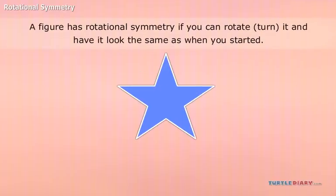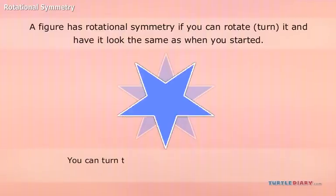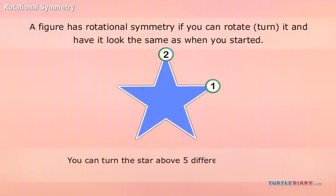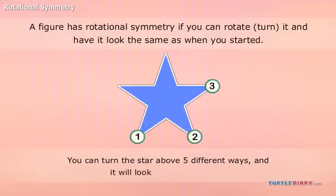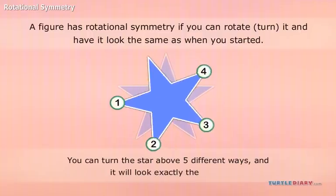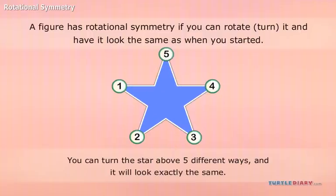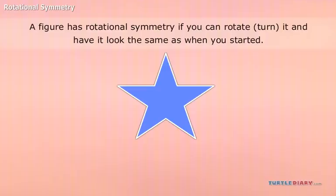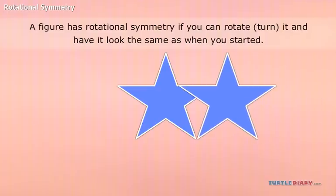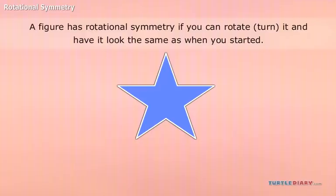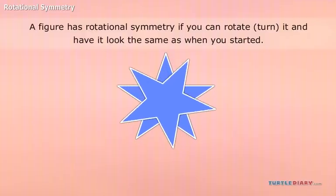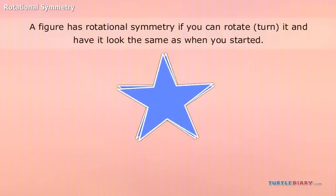For example, you can turn the star above five different ways and it will look exactly the same. Or you can think of it this way: if you had two of these stars sitting on top of each other, you could turn one star and it would land directly on top of the other with no pieces showing.